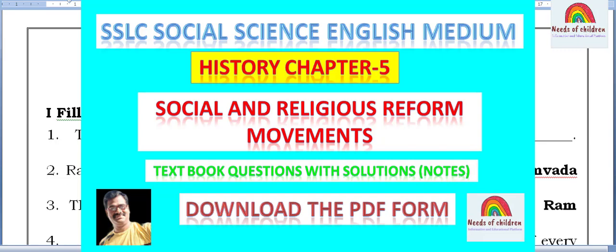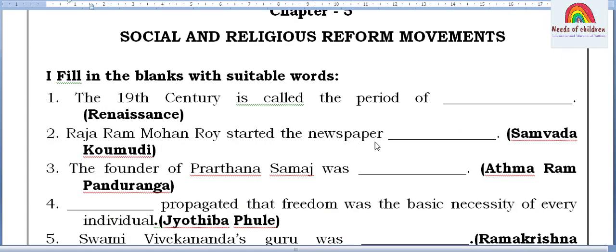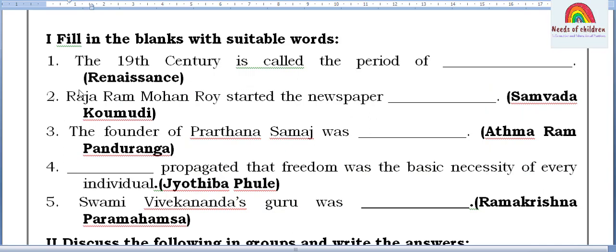So let's come to the fifth chapter: Social and Religious Reform Movements. First, fill in the blanks. The 19th century is called the period of Renaissance. Raja Ram Mohan Roy started the newspaper called Sambad Kaumudi. The founder of Prarthana Samaj was Atmaram Panduranga.